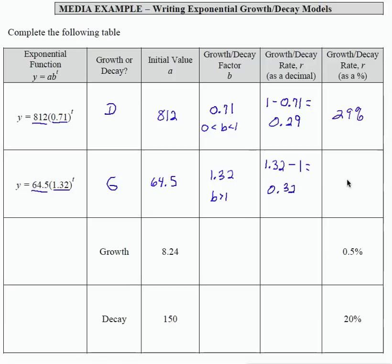Writing that in percent form is 32%. So this 64.5 times 1.32 to the t is a 32% growth equation.